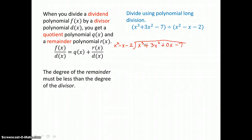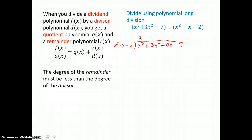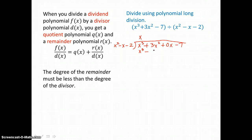To use long division, we ask ourselves: what do we multiply by x squared to get x cubed? That would be x. So we put that up on top and distribute. x times x squared is x cubed. x times negative x is negative x squared. x times negative 2 is negative 2x.